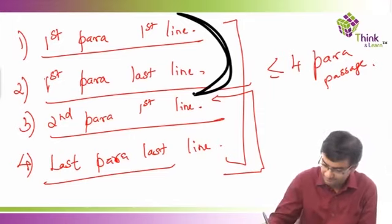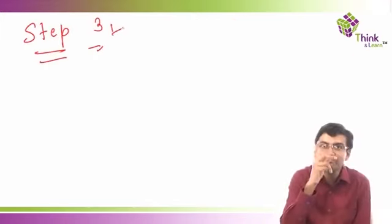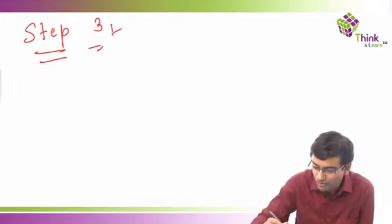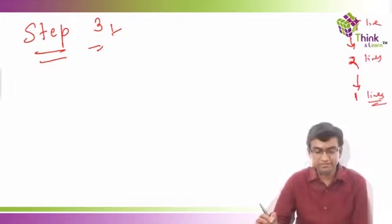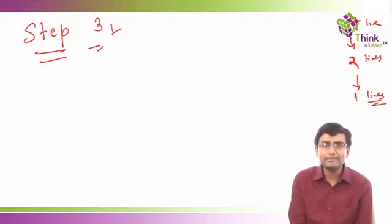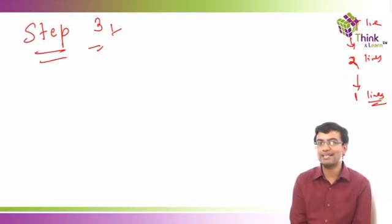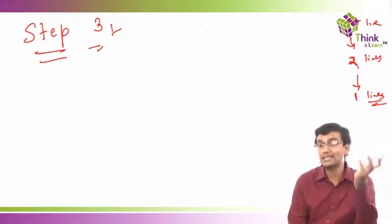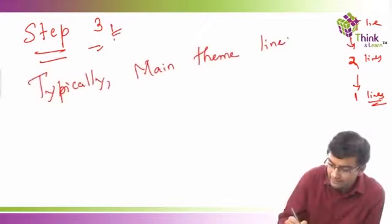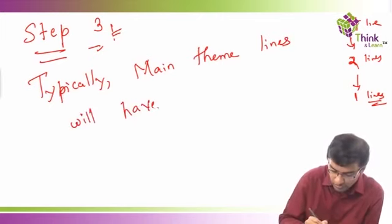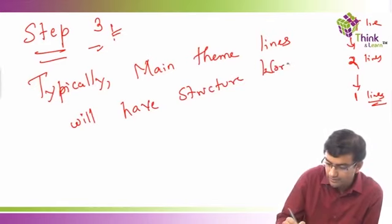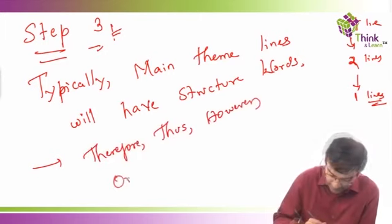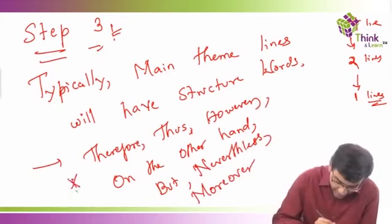From four lines we went to two, and now from two we go to one. How do you identify the single most important line? Main theme lines will typically have structure words. If you're stuck between two lines, find which one has a structure word — that will be the most important line. Examples of structure words are: therefore, thus, however, on the other hand, but, nevertheless, and moreover.